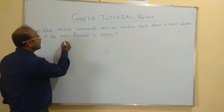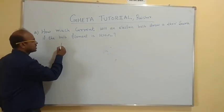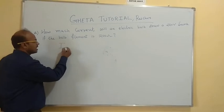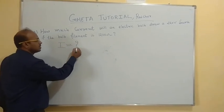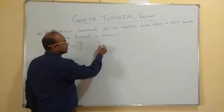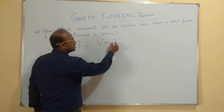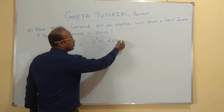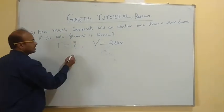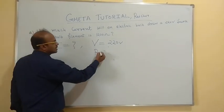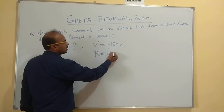So what is given here? They are asking to find out the current, I is equal to question mark. And what is given here? The potential difference V is equal to 220 volt, and resistance R is equal to 1200 ohm.